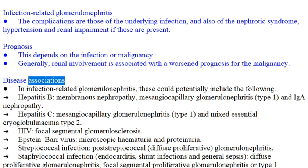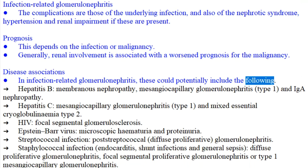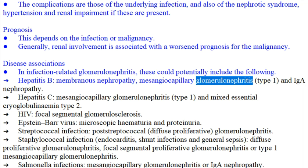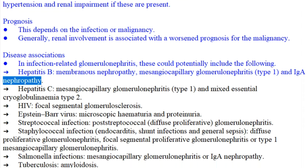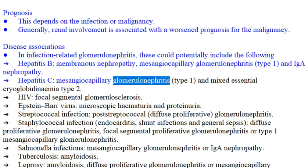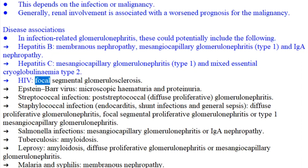Disease associations in infection-related glomerulonephritis could potentially include the following. Hepatitis B: membranous nephropathy, mesangiocapillary glomerulonephritis type 1, and IgA nephropathy. Hepatitis C: mesangiocapillary glomerulonephritis type 1, and mixed essential cryoglobulinemia type 2. HIV: focal-segmental glomerulosclerosis.